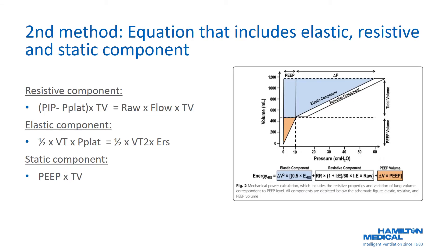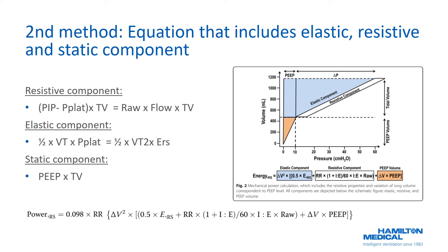In the second method, the authors used an equation that includes all areas shown on the PV graph: the resistive component, the elastic component, and the static component, yielding a full equation for mechanical power of the respiratory system. The major advantage of this method is that it enables quantification of the relative contribution of different components — such as tidal volume, respiratory rate, PEEP, I:E ratio, and airflow — allowing prediction of the effect of their individual changes.